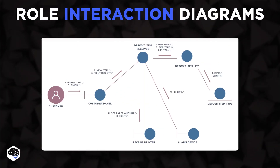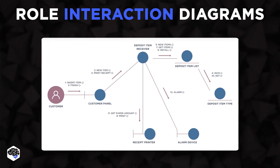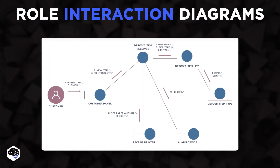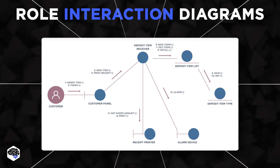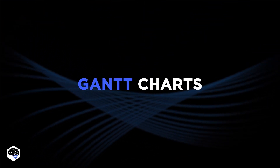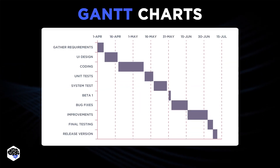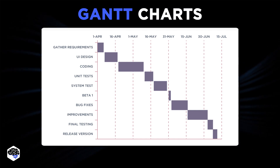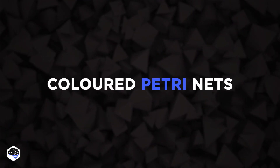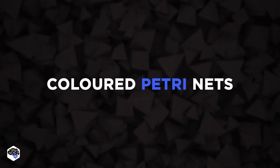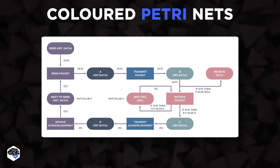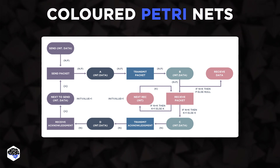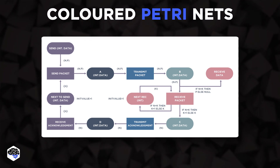There are two types of role interaction diagrams: namely, sequence diagrams and collaboration diagrams. The fifth technique is Gantt charts, which show the total time spent on the project better than other options and track the project timeline. The sixth technique is colored Petri nets — they categorize or highlight users, routes, and complex workflow steps.